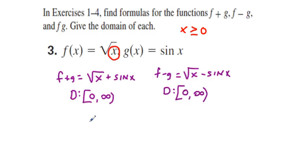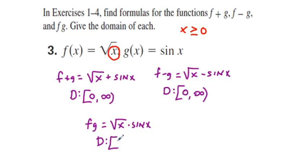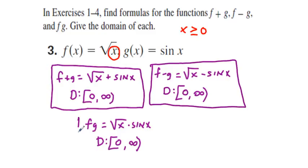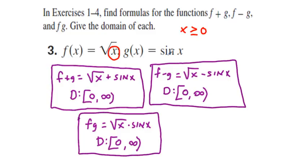And finally for fg, we have square root of x times sine x. The domain is, perhaps surprisingly, also from 0 to infinity. People often ask: are these domains always going to be the same for all these operations? When you're doing addition, subtraction, and multiplication, they pretty much should be — whatever domain restrictions you have originally carry with you.